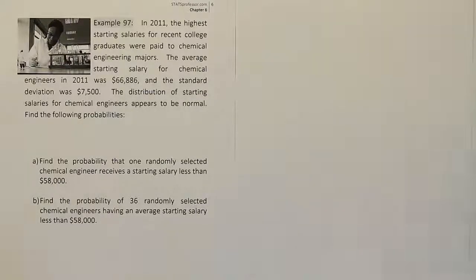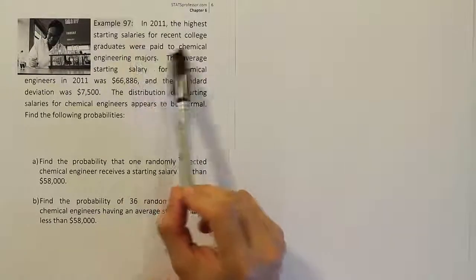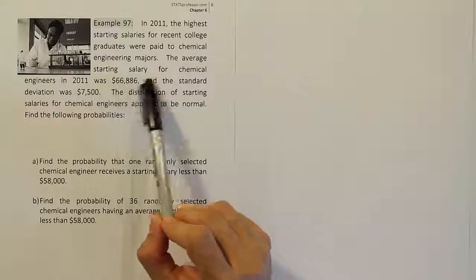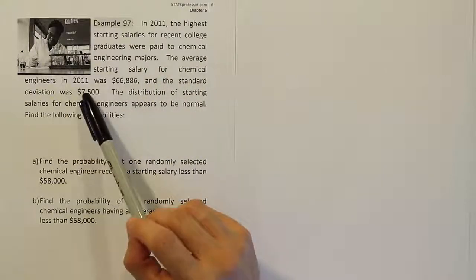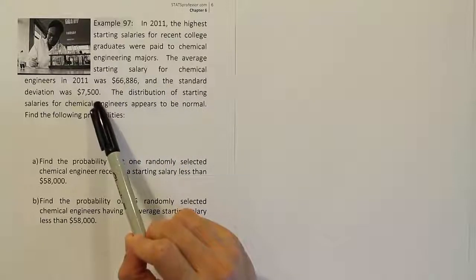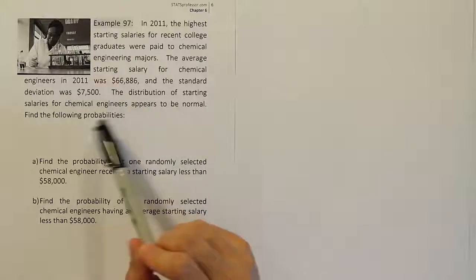Example 97. In 2011, the highest starting salaries for recent college graduates were paid to chemical engineering majors. The average starting salary for chemical engineers in 2011 was $66,886 and the standard deviation was $7,500. The distribution of starting salaries for chemical engineers appears to be normal.